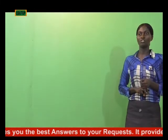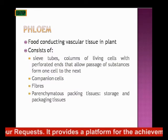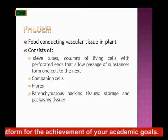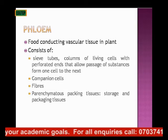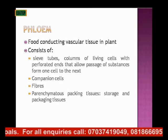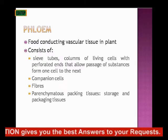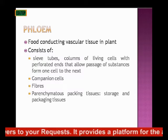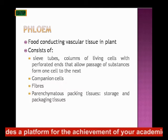Phloem is the food-conducting tissue in plants. Just as the xylem conducts water, phloem carries food substances from where they are produced — mainly the leaves — to other parts of the plant. The phloem consists of living cells with perforated ends that allow the passage of food substances from one cell to the next. It also consists of companion cells, fibers, and parenchymatous packing tissue, which serves for storage.